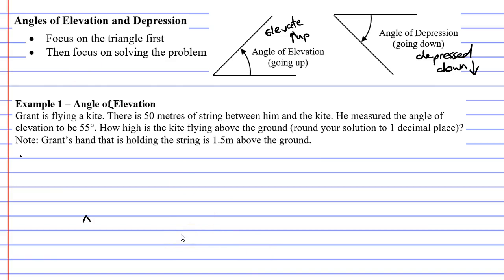I'm going to draw Grant down here and he's flying a kite, so we've got a nice straight string. In the question it said there's 50 meters of string, so 50 meters of string, and here's our kite up here. It says that he measured the angle of elevation to be 55 degrees, so we're going to draw a dotted line across here.